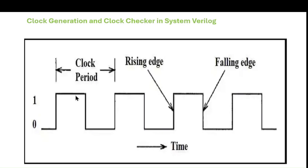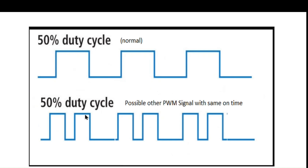Clock Period means the difference between the two positive edges — or two negative edges — is called the Clock Period. Here you can see this is the first edge and this is the second edge. The duration between these two is called the Clock Period. A 50% duty cycle means the Turn On Period and Turn Off Period are both the same; at that point you can say it is a 50% duty cycle.